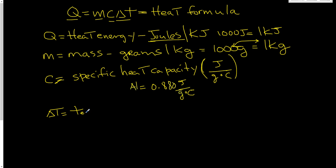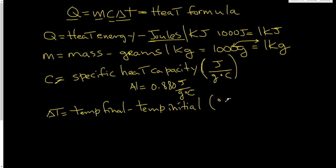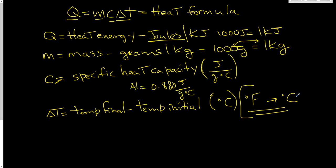Delta T is our temperature change: final temperature minus initial temperature. We are using the metric system here, so for the most part you will see your temperature values expressed in degrees Celsius. You can have them in Fahrenheit and then you would convert to degrees Celsius.